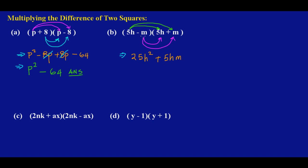Then I'm going to use negative m now to multiply this 5h inside this bracket. So a negative times a positive will give me a negative, and m times 5h will give me 5hm. Again, I'm going to use this negative m to multiply this positive m, and a negative times a positive will give me a negative, and m times m will give me m squared.